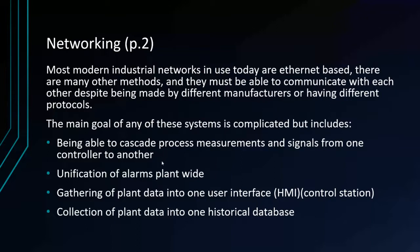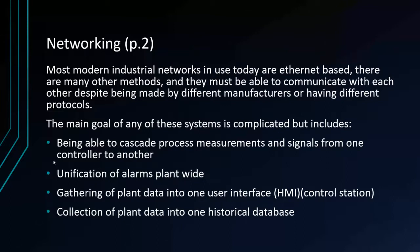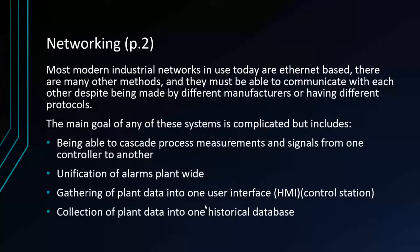The main goals of industrial networks are: cascading process measurements and signals from one controller to another — the backbone of distributed control — unification of alarms plant-wide so you know about upsets before you smell them, gathering all plant data into one user interface or HMI or control station, and collection of plant data into one historical database. Using these networks and protocols, we can take different types of information from different devices and share them between different programs and users, which we'll call applications.